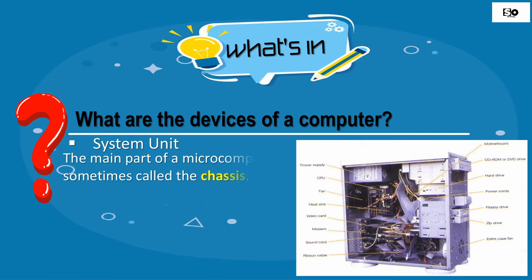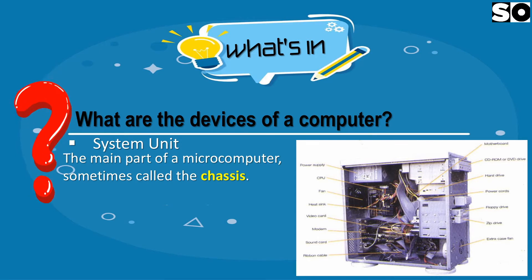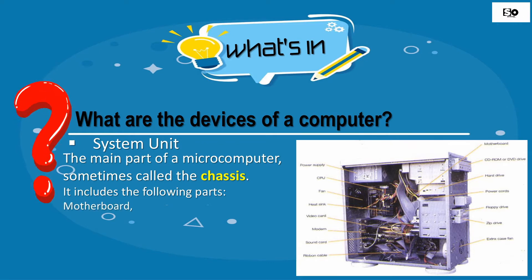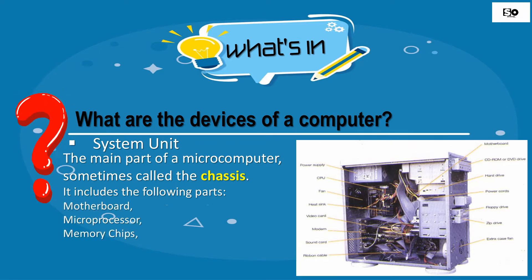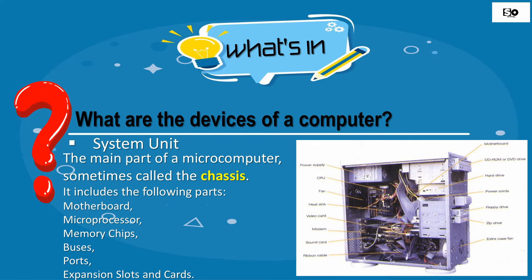System Unit — the main parts of a microcomputer, sometimes called the chassis. It includes the following parts: motherboard, microprocessor, memory chips, buses, ports, expansion slots, and cards.